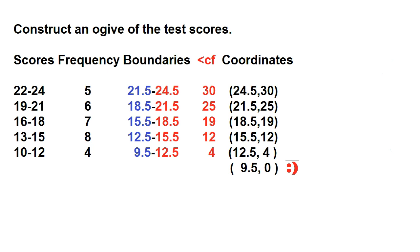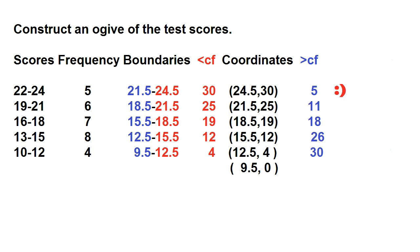Now let's find the values of the greater than or more than cumulative frequency. To find it, copy the frequency of the highest class interval, then add the frequency of the next lower class interval. The frequency of the highest class interval is 5. So 5 plus 6 is 11, 11 plus 7 is 18, 18 plus 8 is 26, and 26 plus 4 is 30.